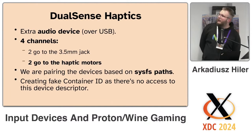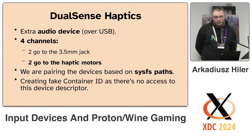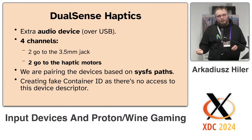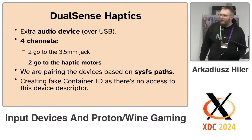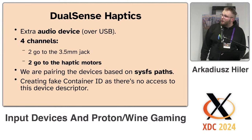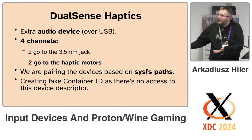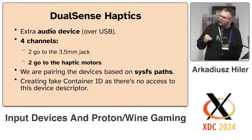Those devices also have haptics, which expose an extra device over USB with four channels. Two channels go to the 3.5mm audio jack and two go to the motors. So if you plug one of these into a normal desktop Linux and start playing audio, you suddenly hear only mids through your controller — no bass, some treble, just mids, and it buzzes weirdly. It would be nice to have some WirePlumber rules to not default to this device at all, since that's not what most users want.